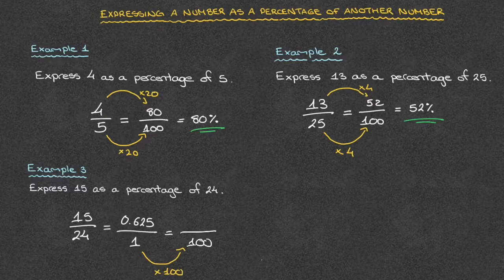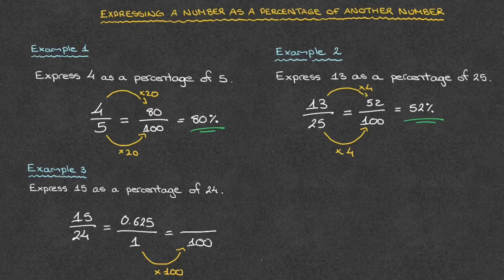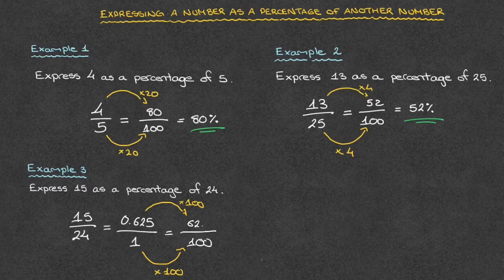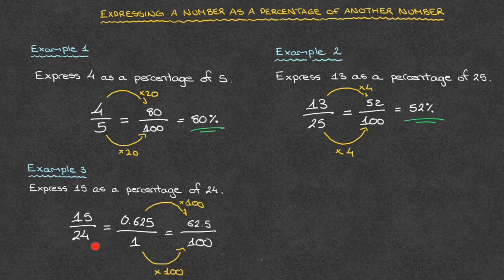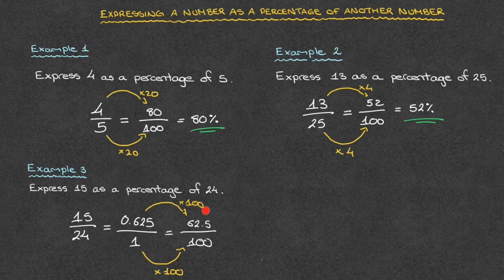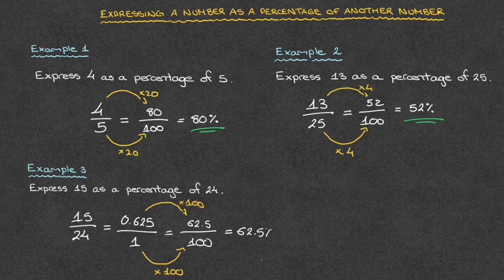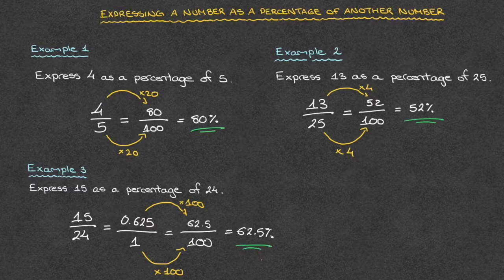So we do the same at the top of the fraction. That is, we multiply the numerator by 100 as well. And if we multiply 0.625 by 100, well, that's equal to 62.5. So 15 over 24 is equivalent to 62.5 over 100. And that tells us that this is equal to 62.5%. And that's the answer.